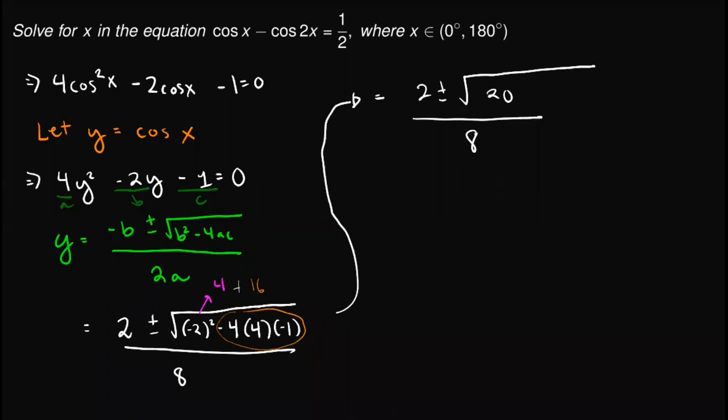And notice that we can actually write 20 as 4 times 5. So we can remove the 4 from the square root, move it out, and we will have 2 plus minus 2 square root of 5, all over 8.